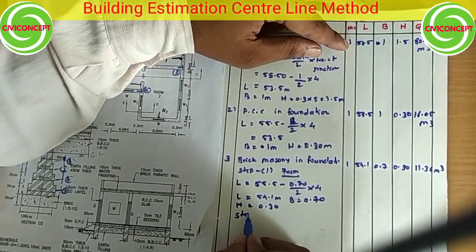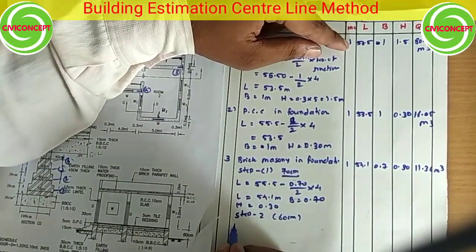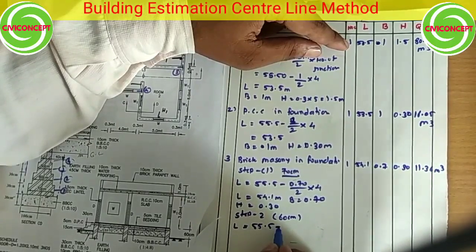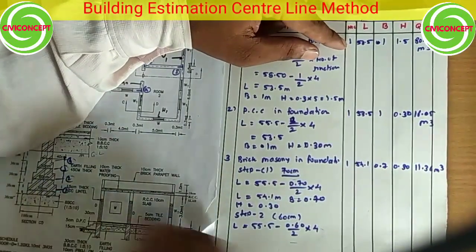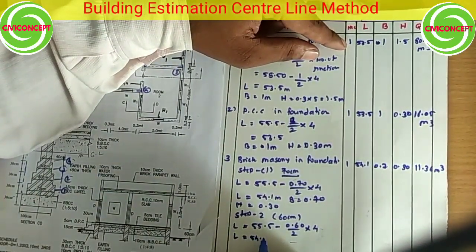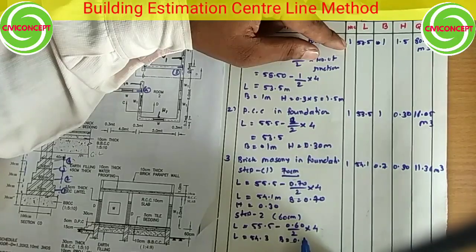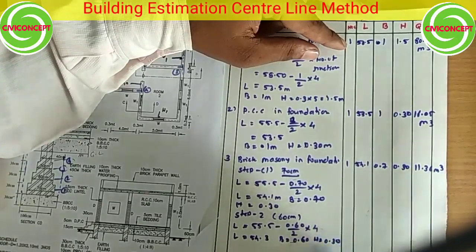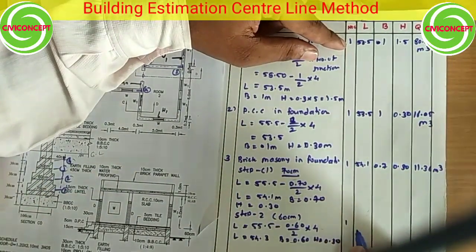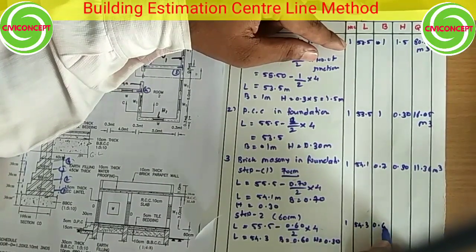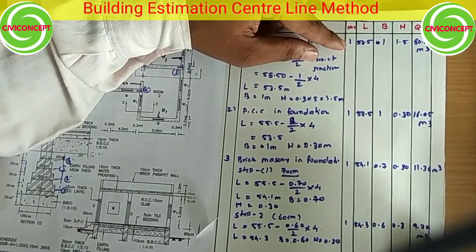Step 2 has a width of 60 centimeters (0.6 m). Length = 54.3 meters, width = 0.6 m, height = 0.3 m. Quantity for step 2 = 54.3 × 0.6 × 0.3 = 9.77 cubic meters.